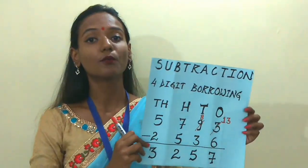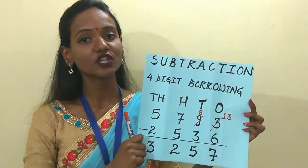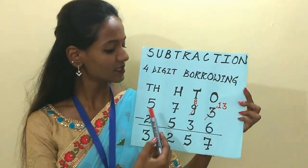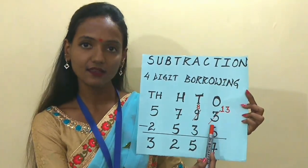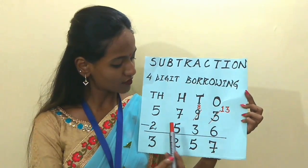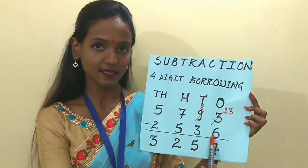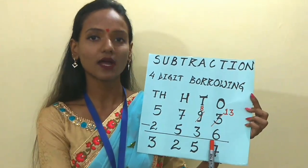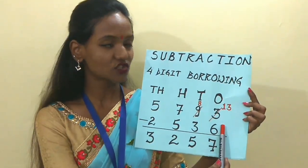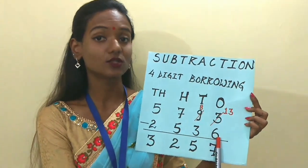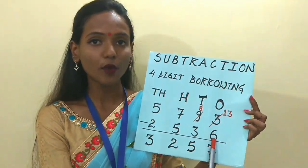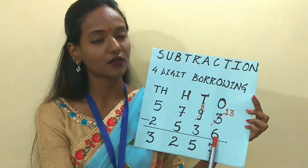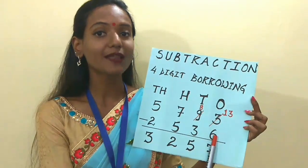Moving on to the next topic: subtraction with 4-digit borrowing. Let's see — these are the 2 numbers children: 5,793 minus 2,536. Again we shall start from the 1s place. What are the digits children? 3 and 6. As you can clearly see, 3 is smaller than 6, so it's not possible for us to subtract. What shall we do? We shall borrow.